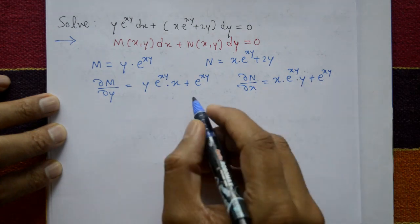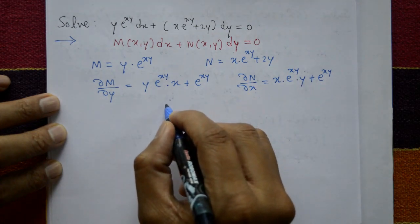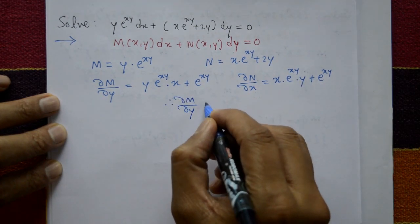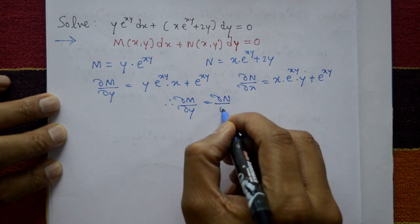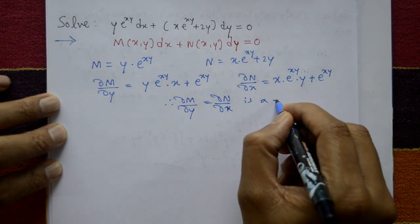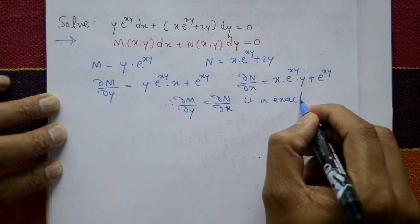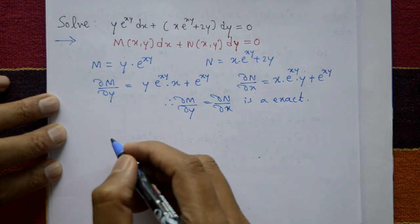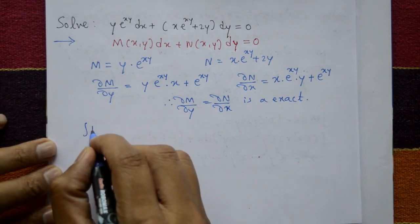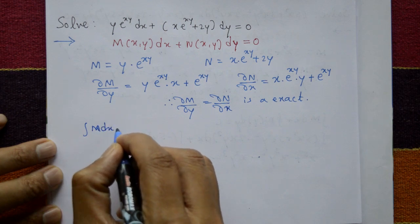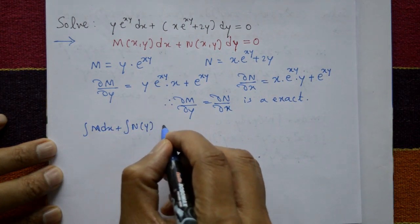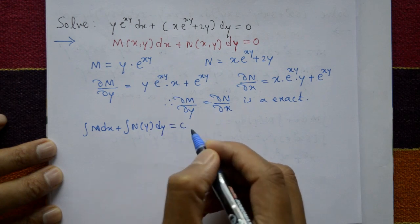Both are the same. Therefore ∂M/∂y = ∂N/∂x, so the given differential equation is exact. The solution is given by: integration of M dx + integration of N (terms not containing x) dy = c.